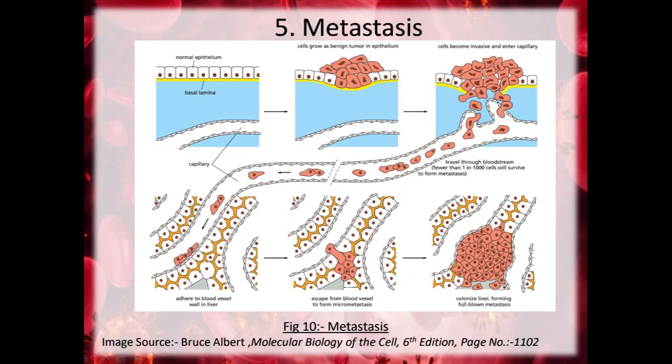Next is metastasis. Cancer cells generally need to spread and multiply at new sites in the body through a process called metastasis. This is the most deadly and least understood aspect of cancer, being responsible for 90% of cancer associated deaths. Metastasis is itself a multi-step process: the cancer cells first invade local tissues and vessels, move through the circulation, leave the vessels, and then establish new cellular colonies at distant places.